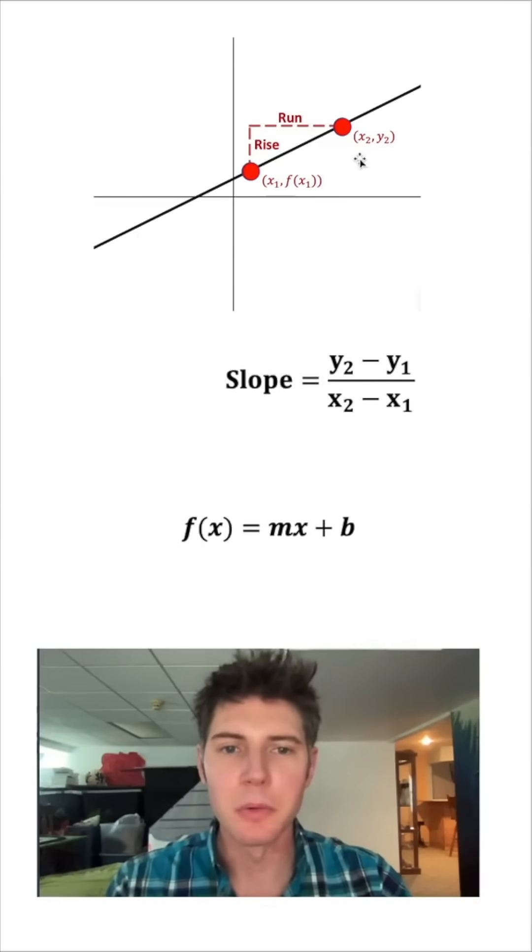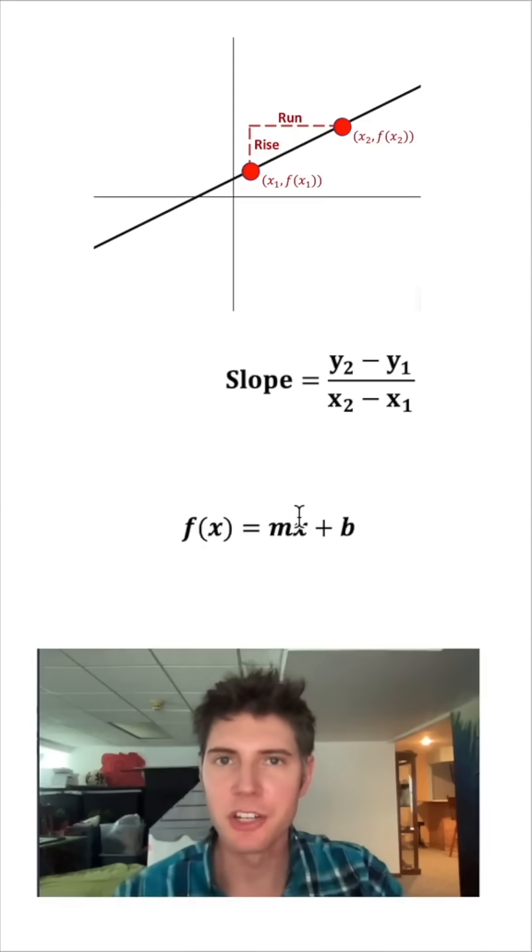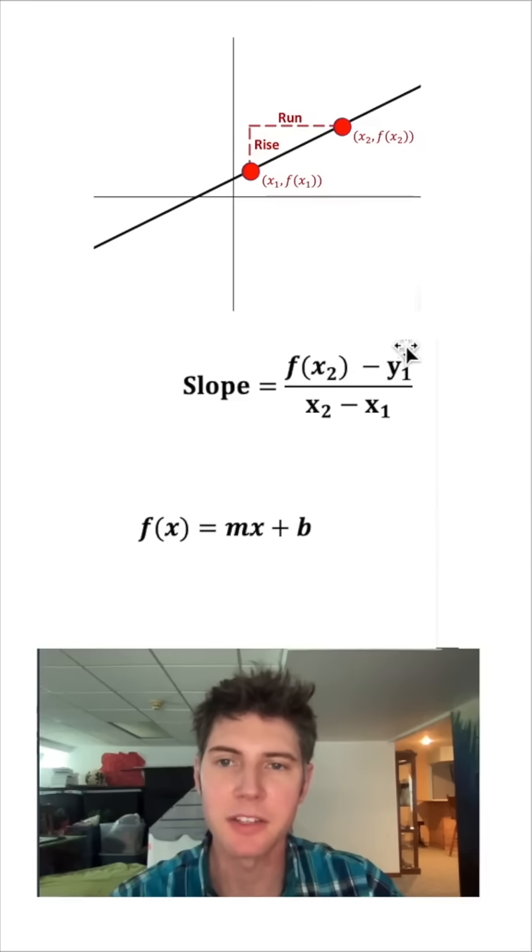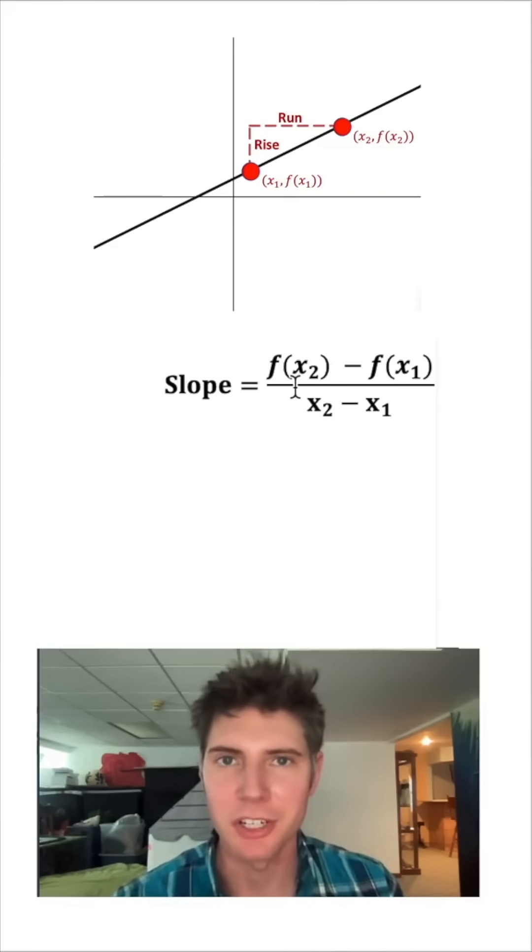And when we plug in x2, we're gonna have an output of f of x2. And we can also change our slope. Instead of y sub 2, let's make it f of x sub 2 minus f of x sub 1. So it's the exact same thing. We're measuring the rise over run, but we're using function notation instead.